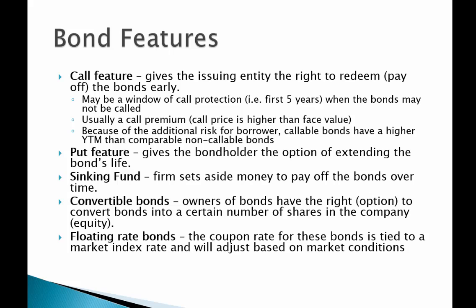Bonds may have a call feature, which gives the issuing entity the right to redeem or pay off the bonds early. A bond may have a maturity 20 years from now, but if it's callable, the issuer may choose to pay it off early. There's typically a window of call protection — for instance, for the first five years, the bond may not be called.